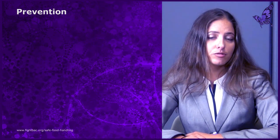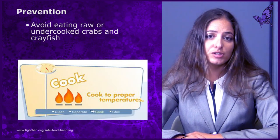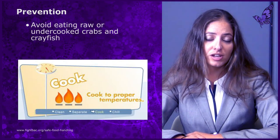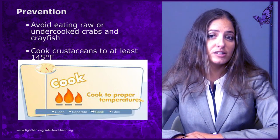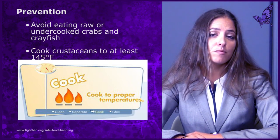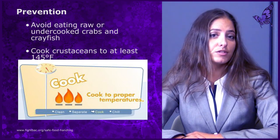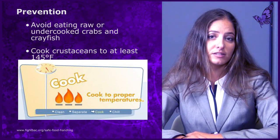While treatment is fairly straightforward, prevention is the most important measure regarding this disease. The main preventative measures include avoiding consumption of raw or undercooked crabs and crawfish, especially in endemic areas. Crustaceans must be cooked to a minimum temperature of 145 degrees Fahrenheit, which is equivalent to 63 degrees Celsius.